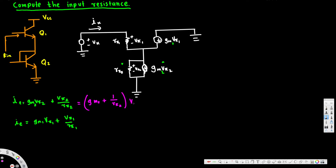So the first expression becomes (gm2 + 1/r52)·v52, and the second becomes (gm1 + 1/r51)·v51. That's the emitter current in simplified form for both sides.